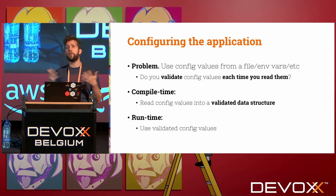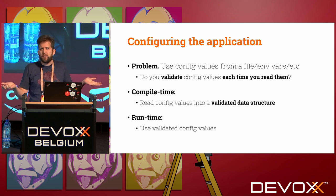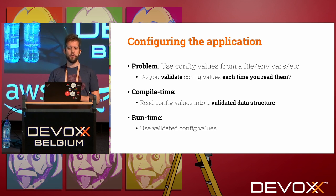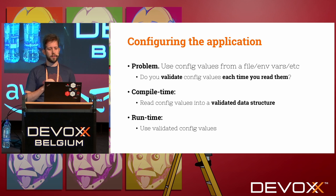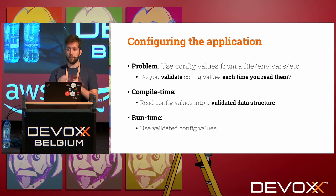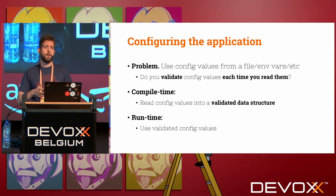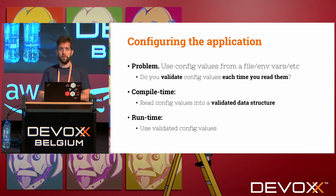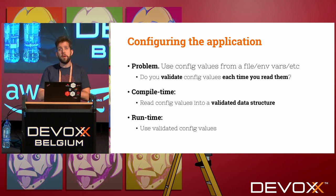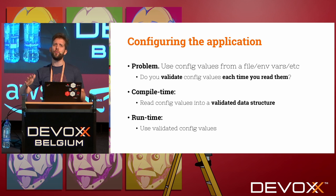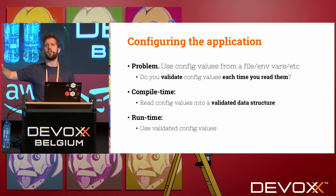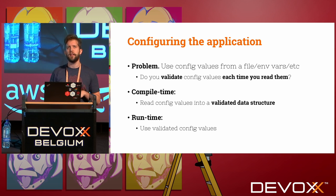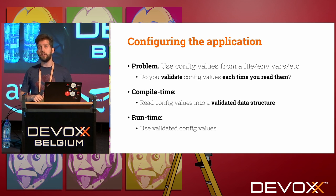A simple example: configuring an application. You load a configuration file, you validate the configuration values, maybe map them into a validated data structure. Then at runtime, you always use that validated data structure — you don't read the file every single time. That's not efficient.